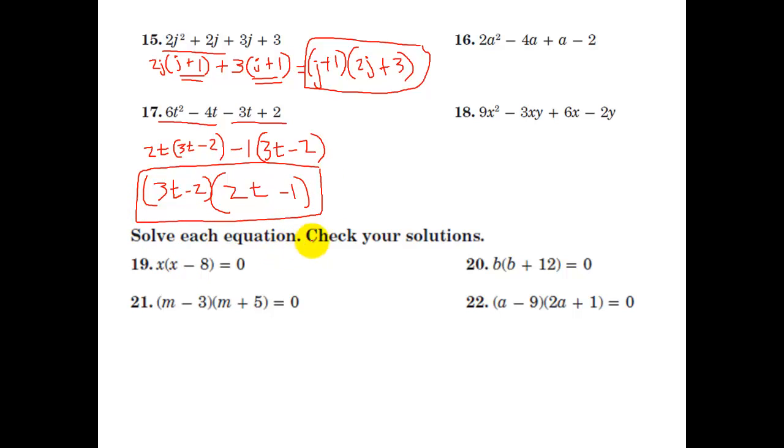The very last thing is solve each equation. So here we're going to utilize the zero product property. The fact is, everything on the left is equal to zero. So let's do 21. If this product of the first thing multiplied by the second thing is equal to zero, either the first thing has to be zero, m minus 3 equals zero, or the second thing has to be zero, m plus 5 equals zero. Then we can solve each of these equations. Here we add 3, so we get m equals 3. And the other possibility, subtract 5, and we get m equals negative 5.